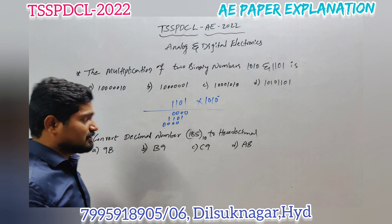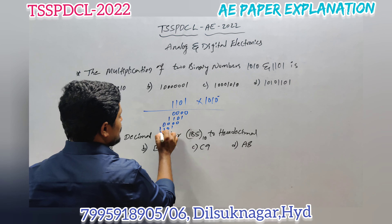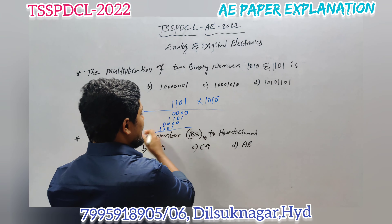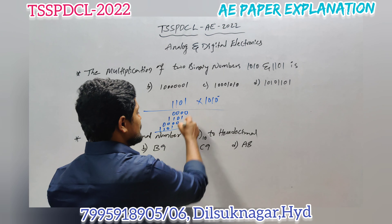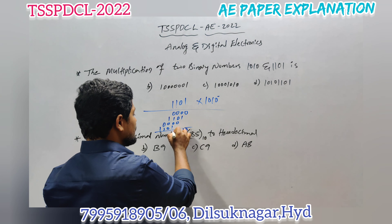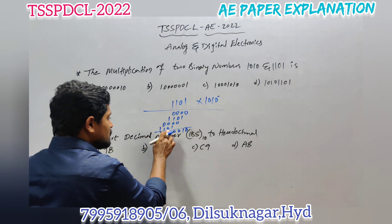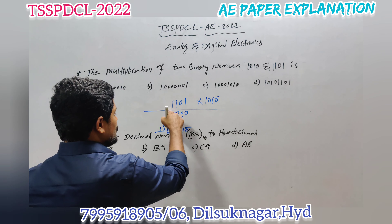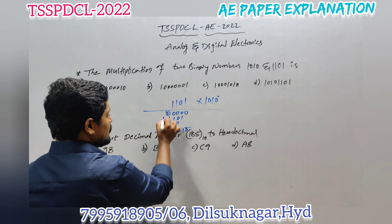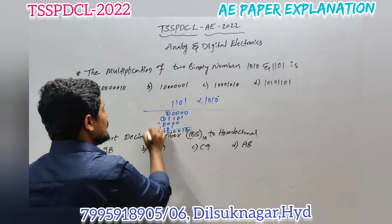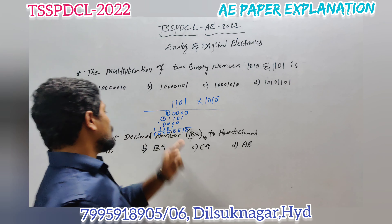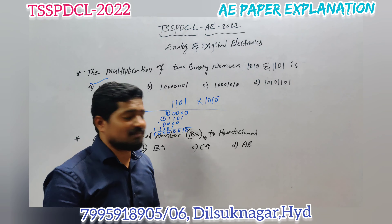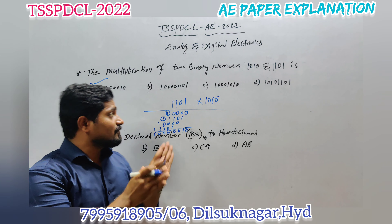Multiplying by 0 gives 0000. Then multiplying by 1 gives 1101. Using the shift-and-add method: after adding the partial products, we get 1 double-0 triple-0 1 0, which is the result. Option A is the right answer. This is a basic question — for sub-engineering students, you should also be prepared for subtraction, division, binary addition, 2's complement subtraction, and 1's complement subtraction.